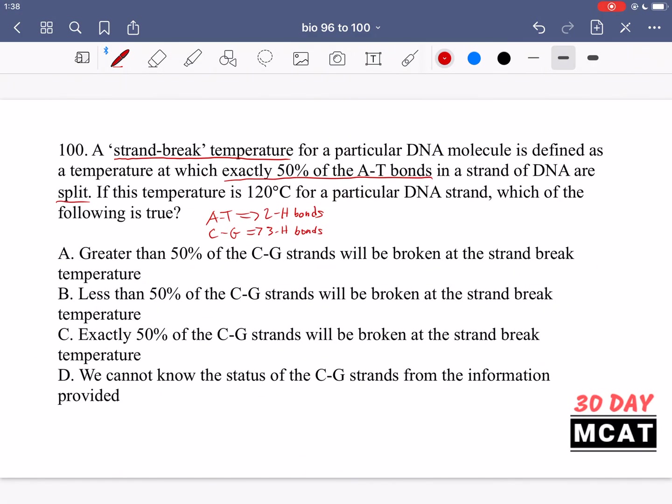So what this is saying is that there are additional bonds between C and G, those nucleotides, versus A and T and therefore they're more strongly held and when you break apart DNA strands what you're doing is you're breaking those hydrogen bonds so that the strands are split. So at a certain temperature if we're saying that exactly 50% of the AT bonds are broken and it's harder to break the GC bonds because there's an extra bond holding them together, then it makes sense that at this temperature we don't have as many GC bonds broken.